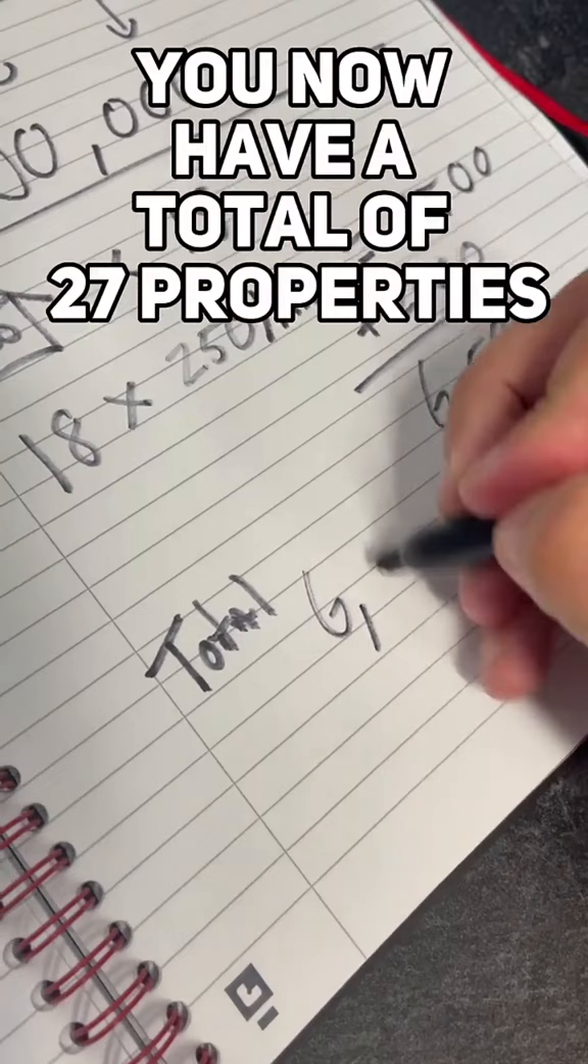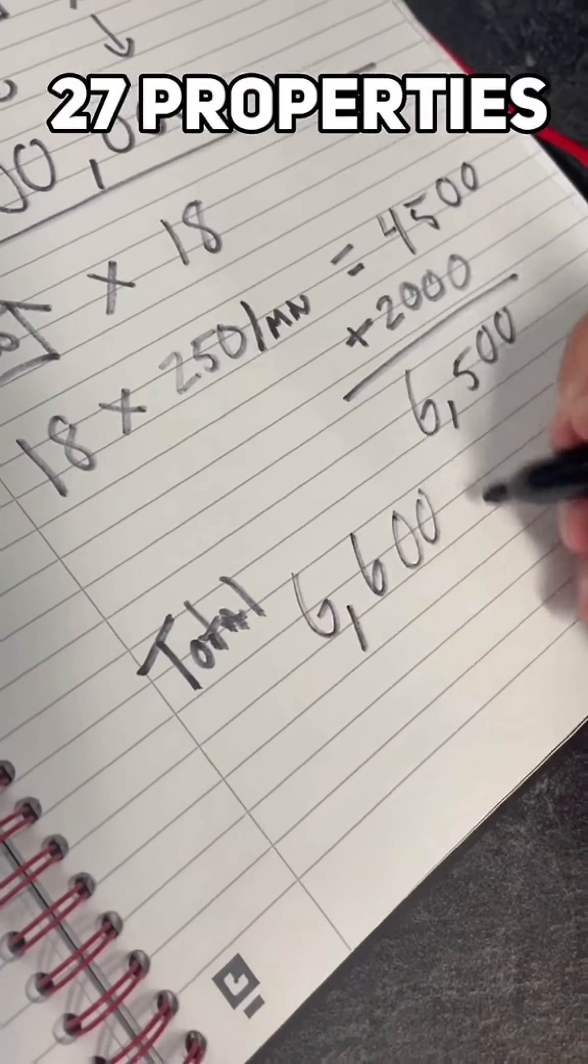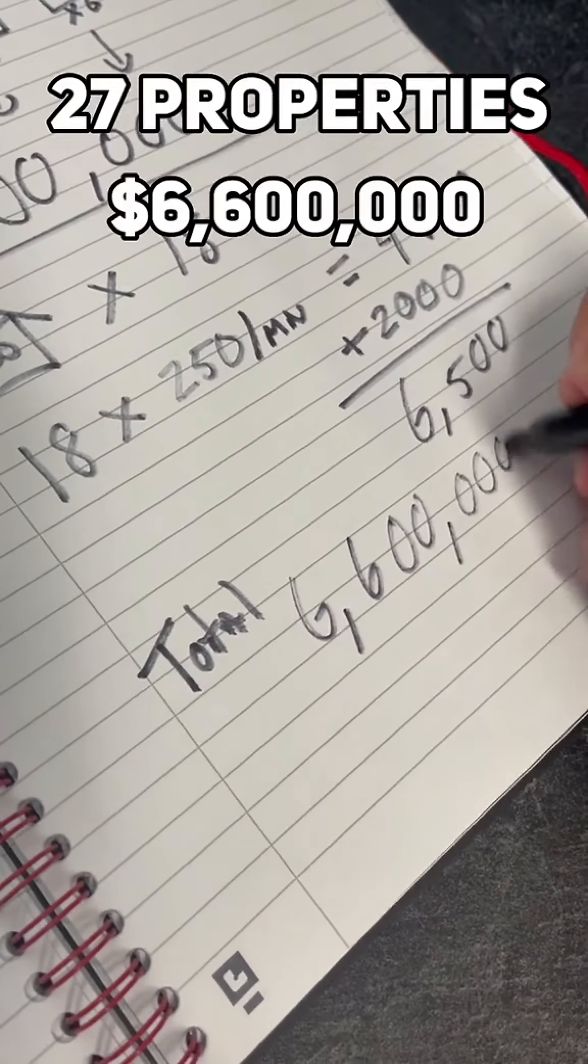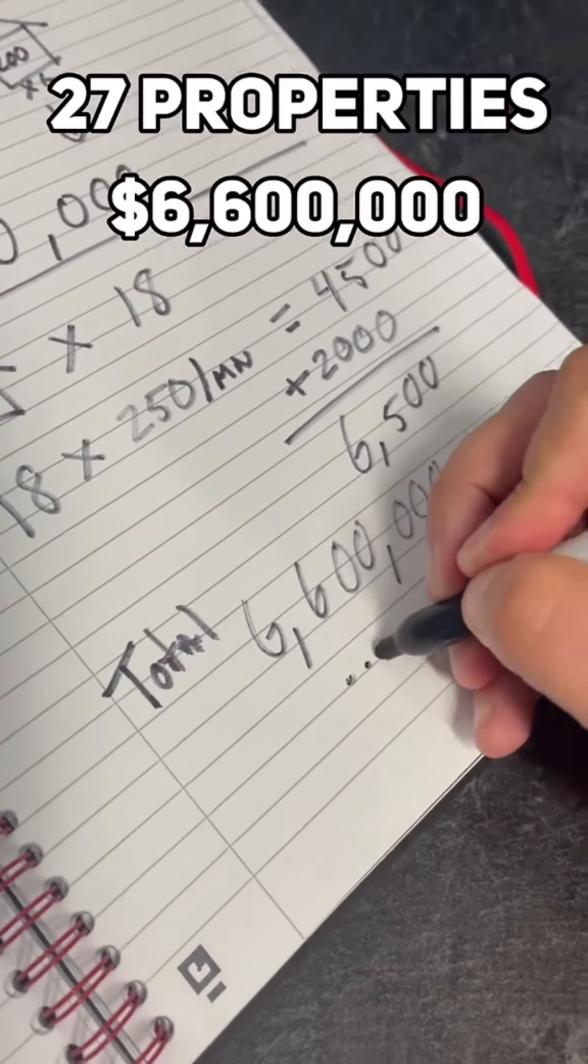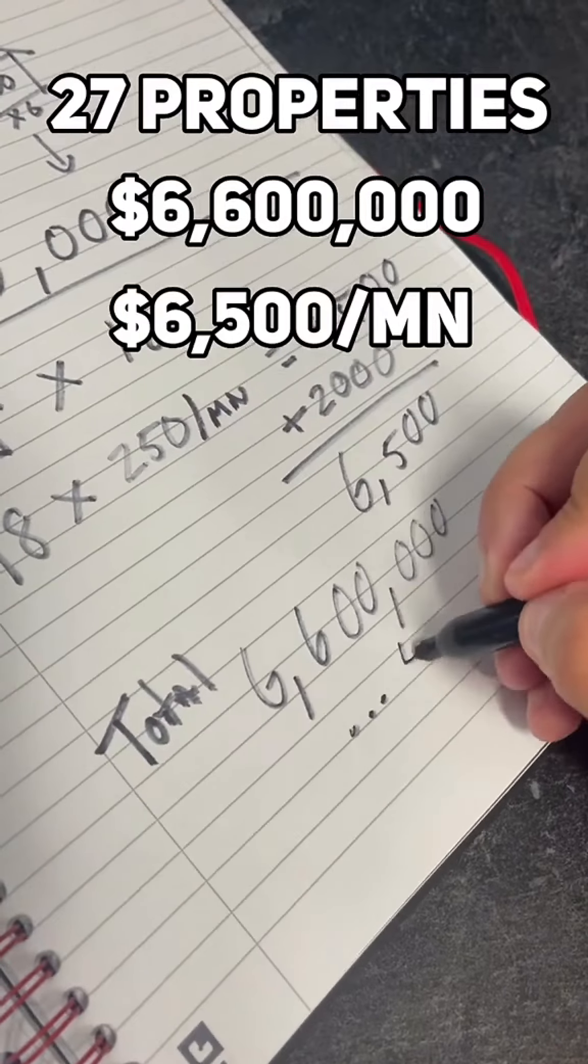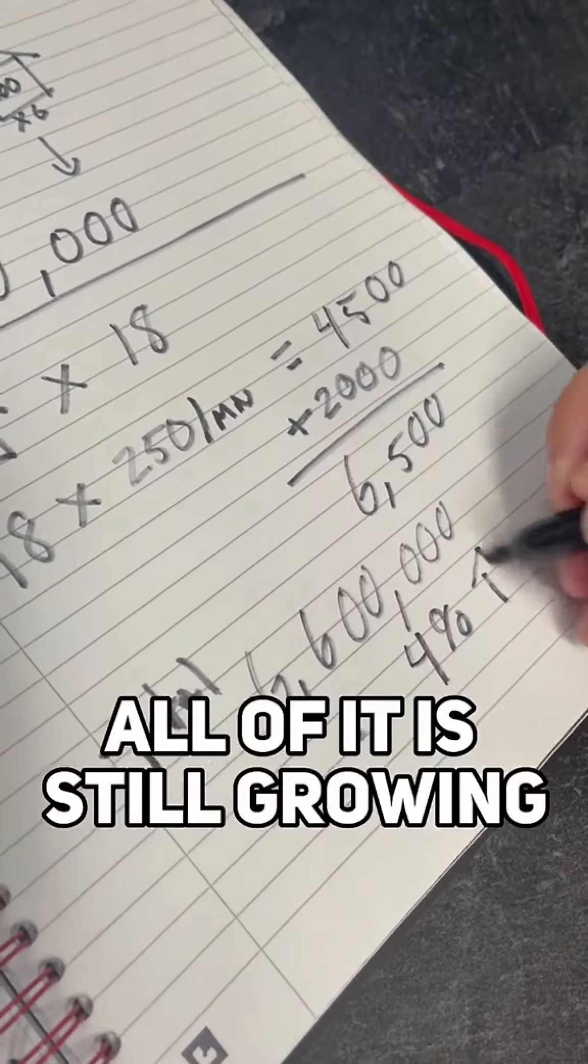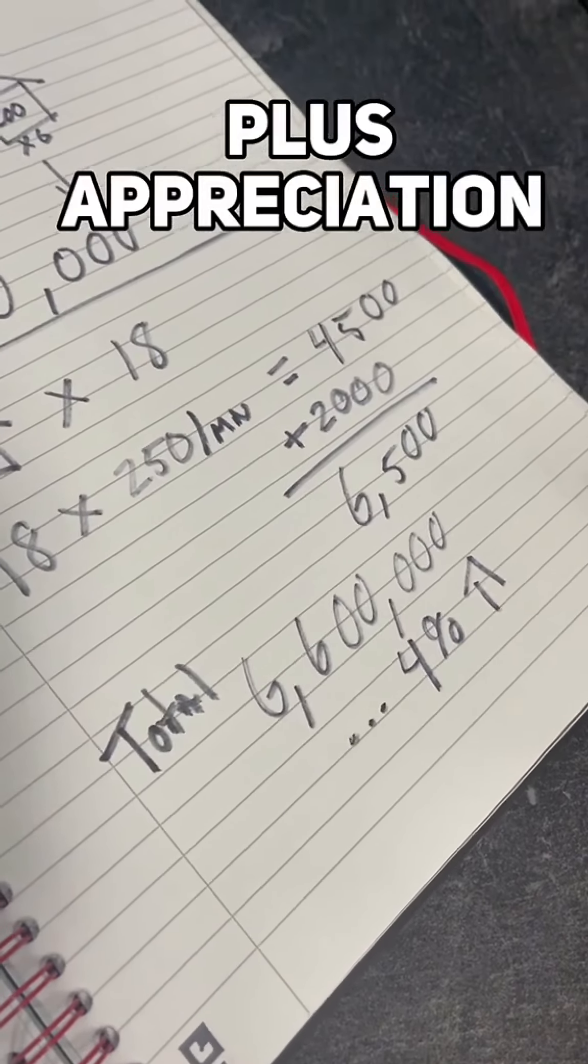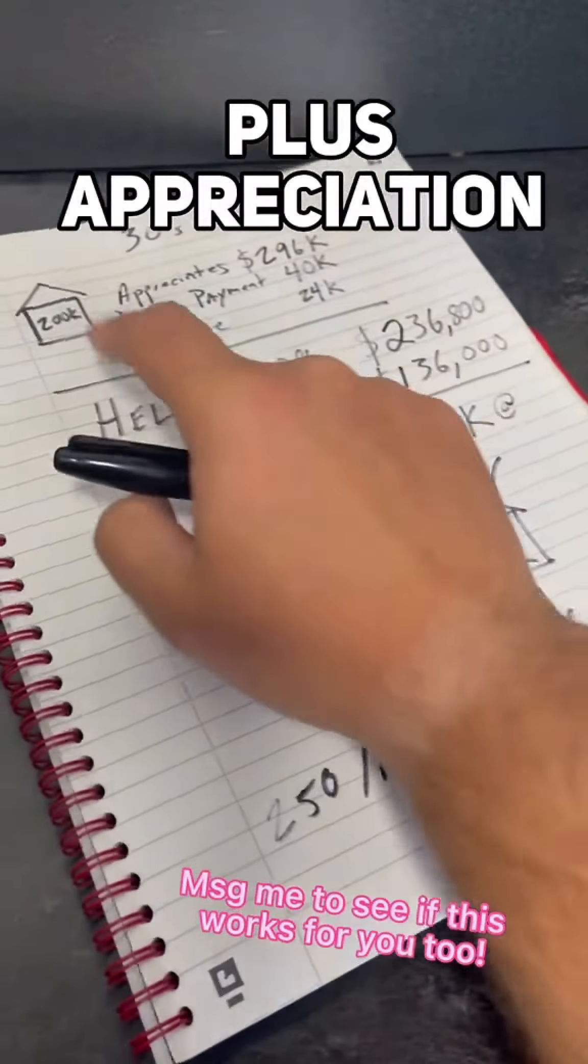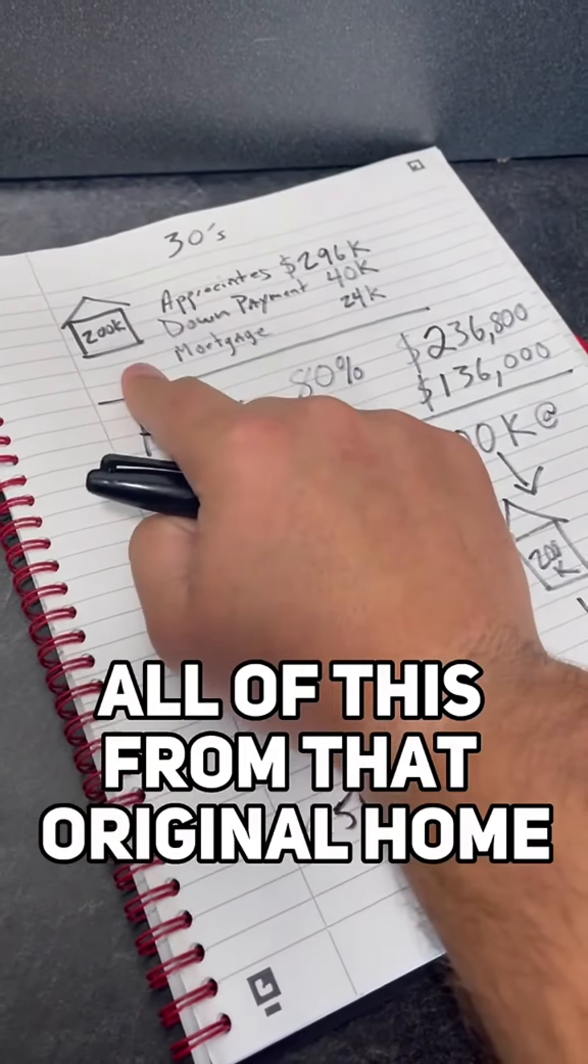After the 30 years, you now have a total of 27 properties, net worth of about $6.6 million, $6,500 in passive income per month. And all of it is still growing at about 4% appreciation every year. All of this from that original home.